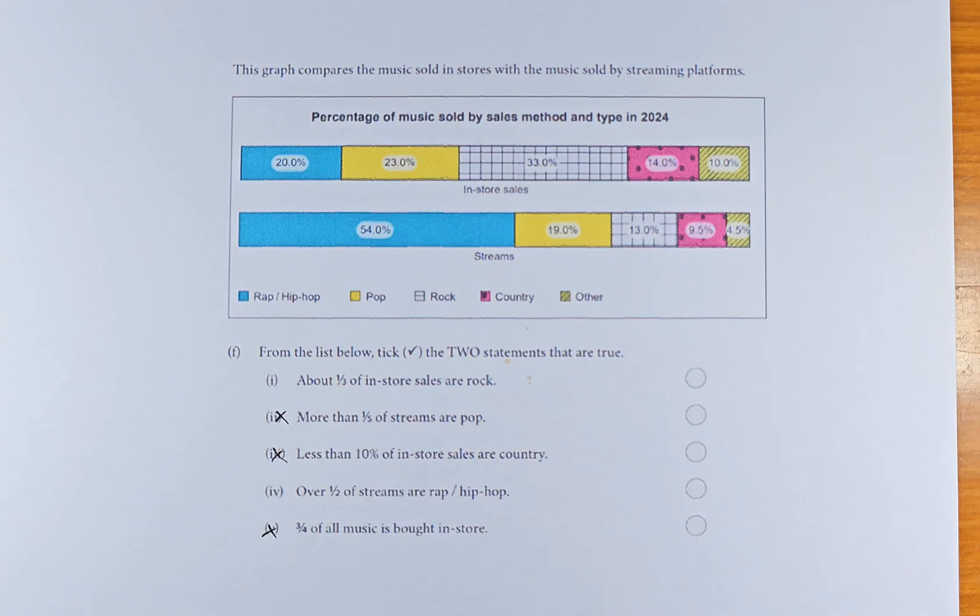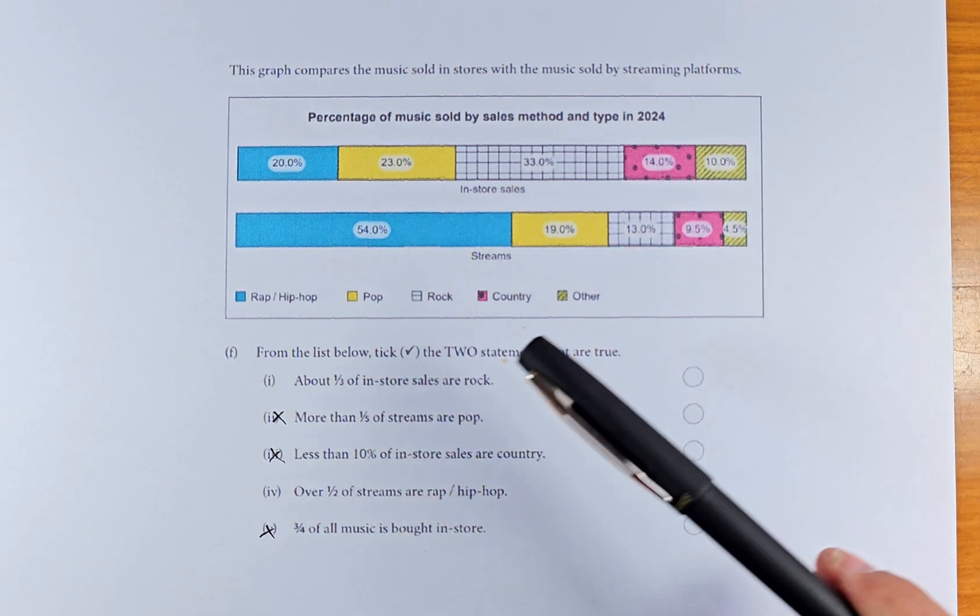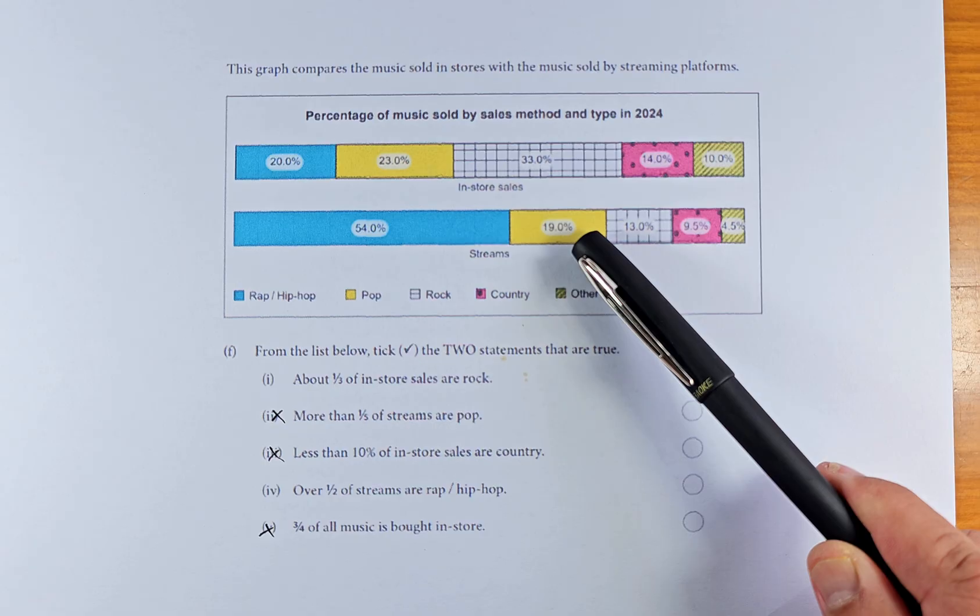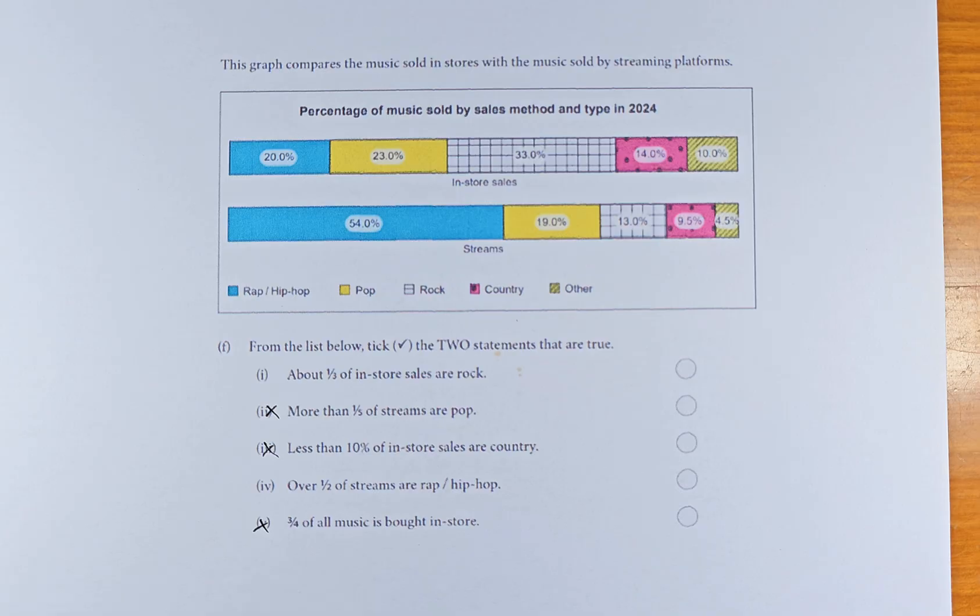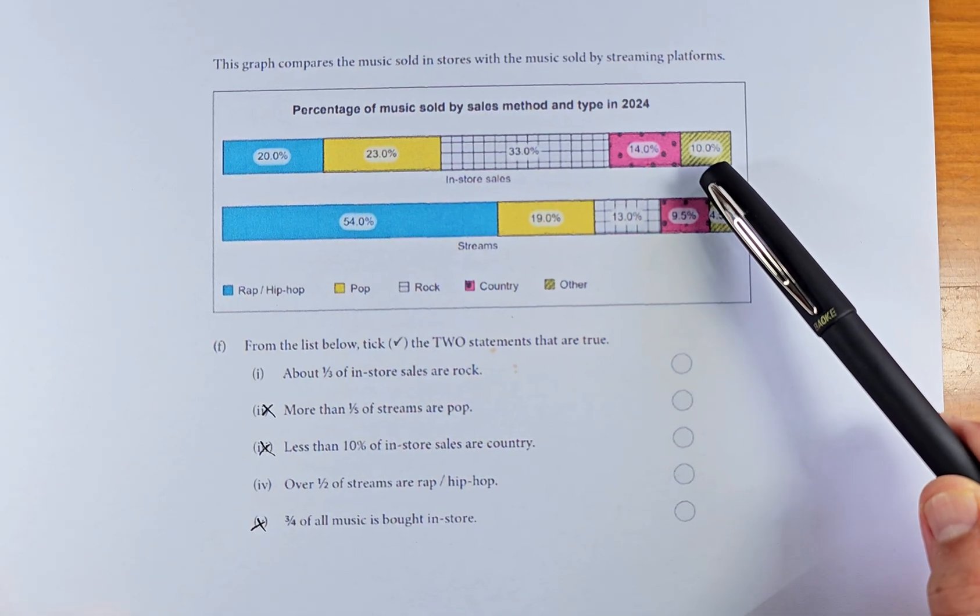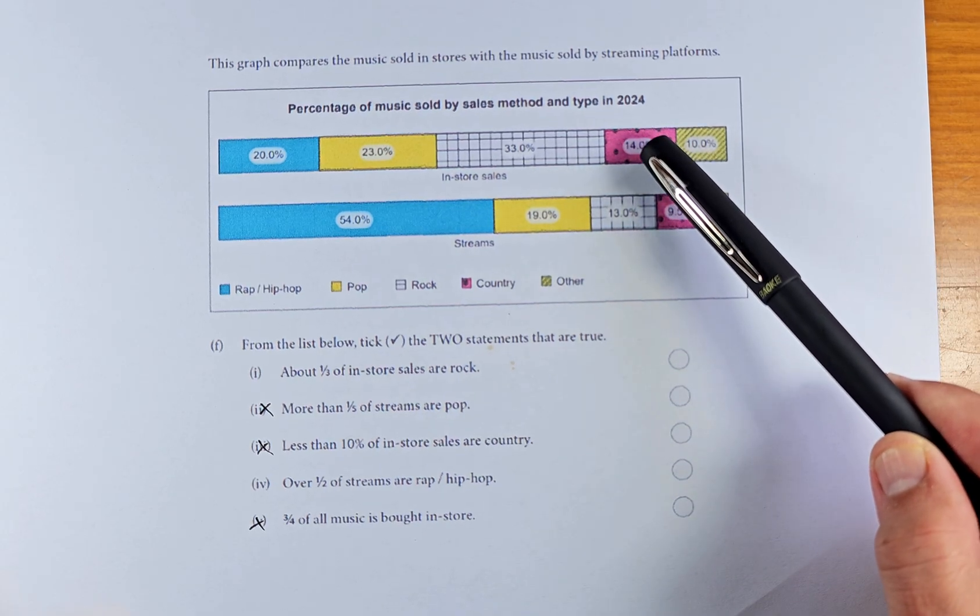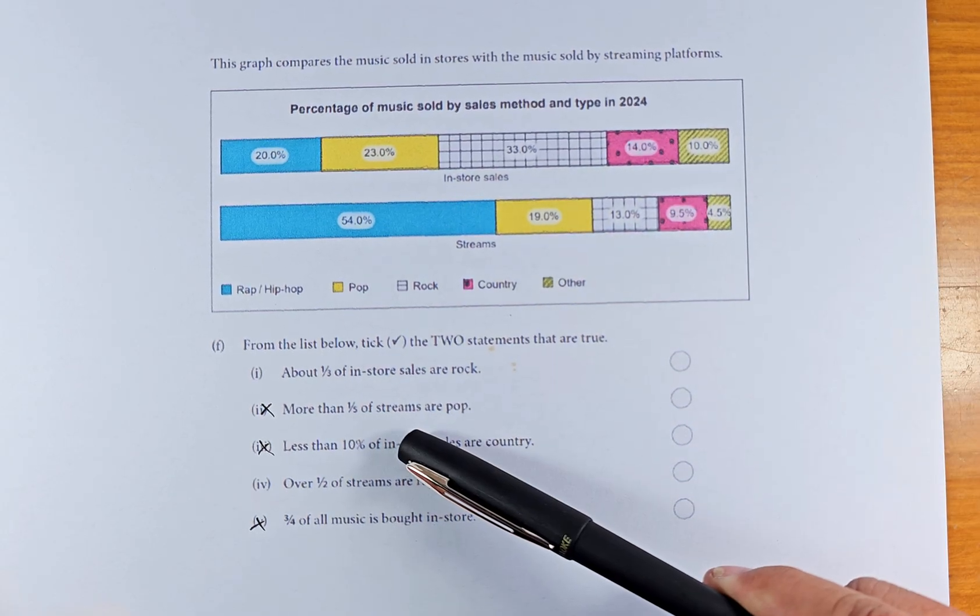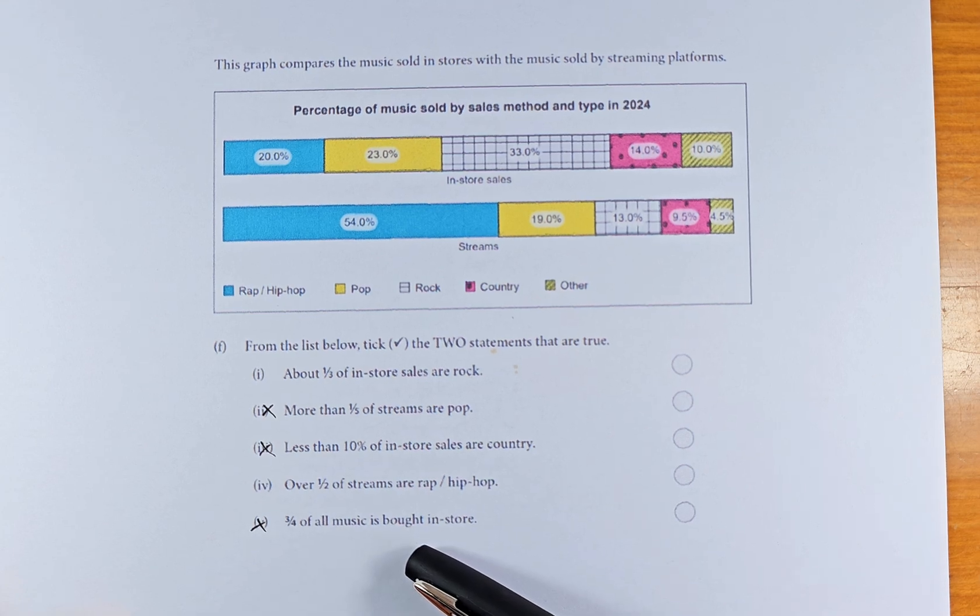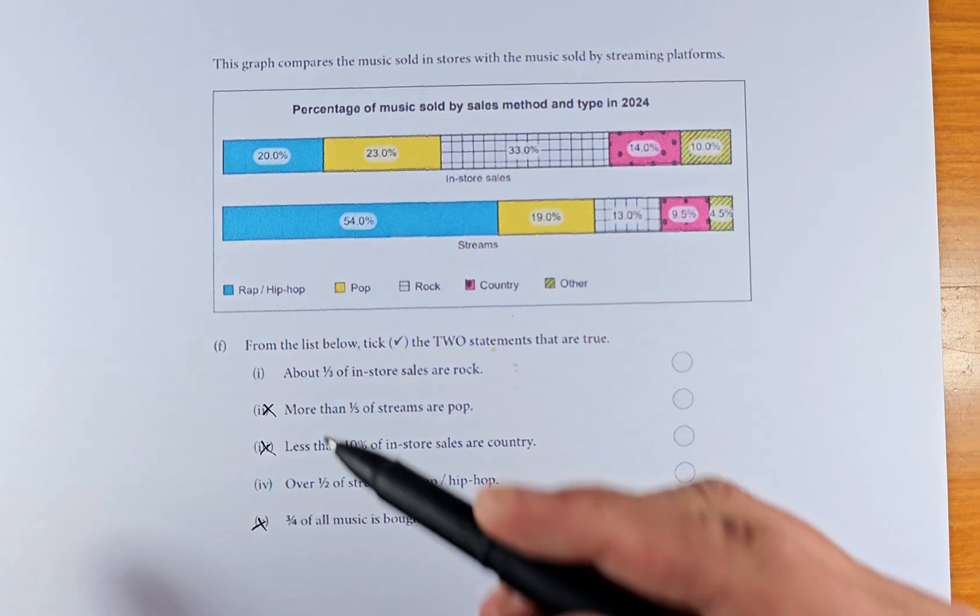So we shall look at 2, 3, 5 because they are not true and we can understand that. More than one-fifth of streams are pop. So streams are here. Pop, if you look at the pop, it's yellow. So 19% is not more than one-fifth. 20% is one-fifth. So 19% is less than 20%, so it is not true. Less than 10% of the in-store sales are country. Country, if you look at country, it is 14%. 14% is not less than 10%, so it is again not true. And last but not least, 3 quarters of all music are bought in-store. There's no data on it. So we cannot claim that.